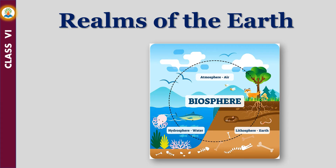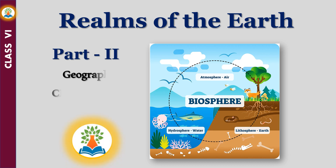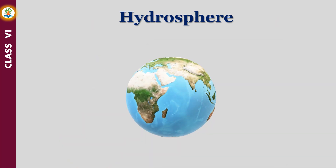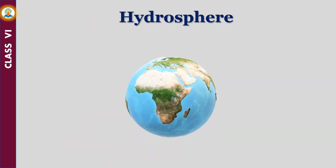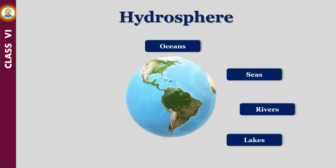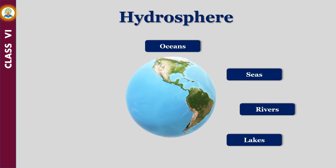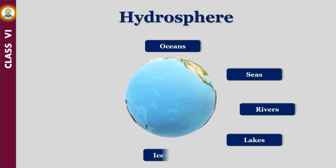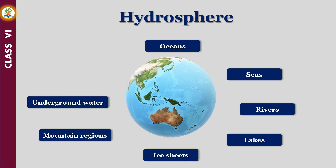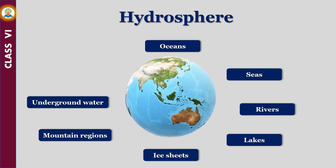Hello friends, in part 1 we had learned about the lithosphere. In this part we will learn about hydrosphere, atmosphere, and biosphere. All the water bodies on the earth's surface such as the oceans, seas, rivers, and lakes together make up the hydrosphere. It also includes the ice sheets in the polar and high mountain regions, underground water, and water vapor in the air.